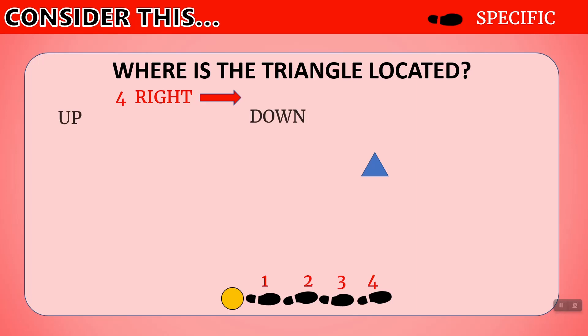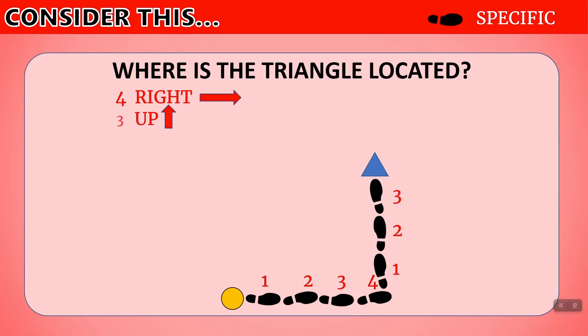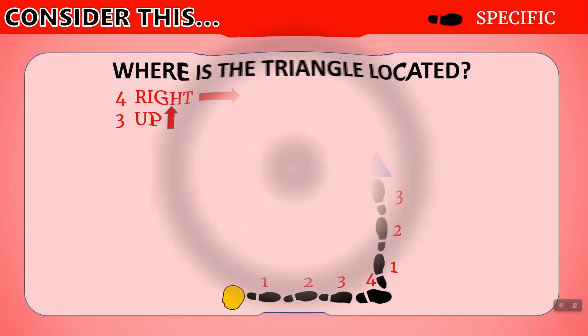Now we need to either move up and down. In this case, we will move up a certain number of spaces. Let's count one, two, three steps, and we're at the triangle. So we've moved three steps up. We've moved four steps to the right and three steps up from the circle in order to get to the triangle.